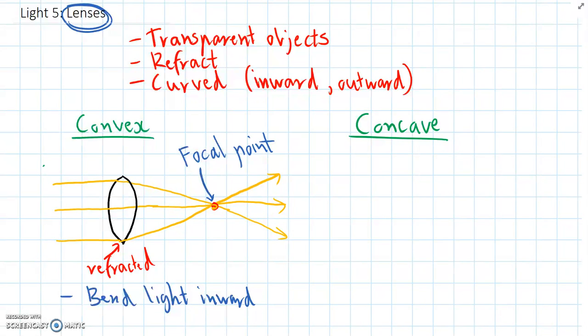So concave lenses are the opposite shape. They're curved inward and they cause light to bend outward. The complete opposite of convex lenses.